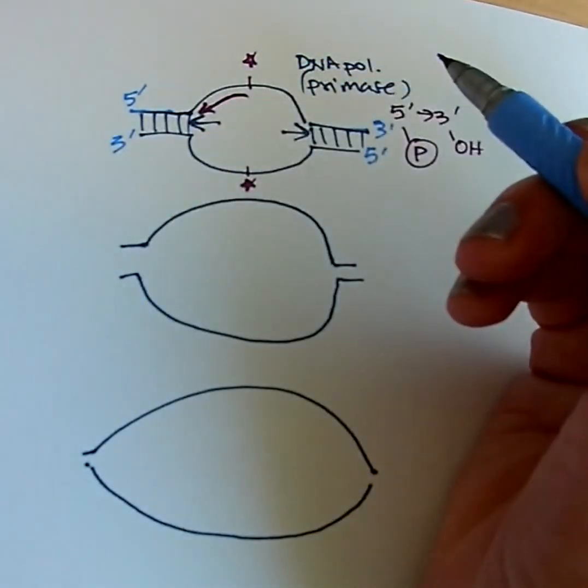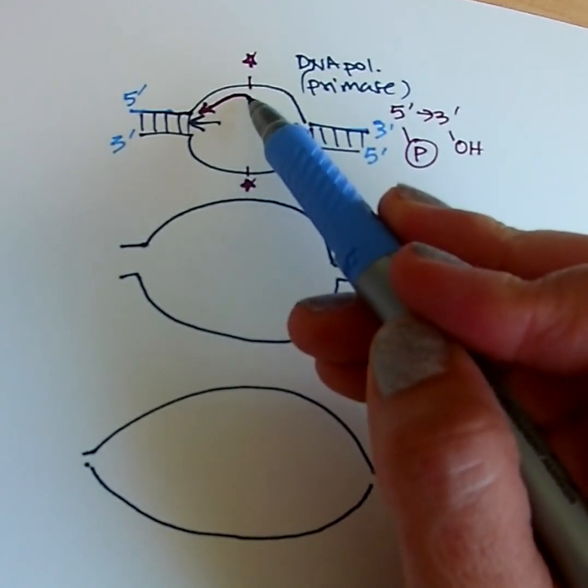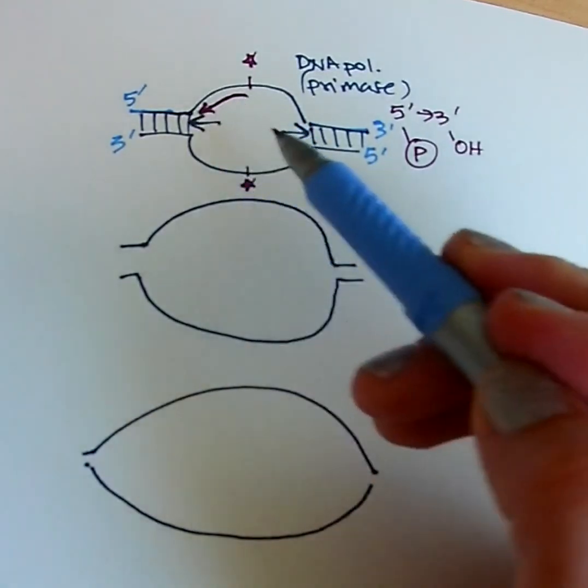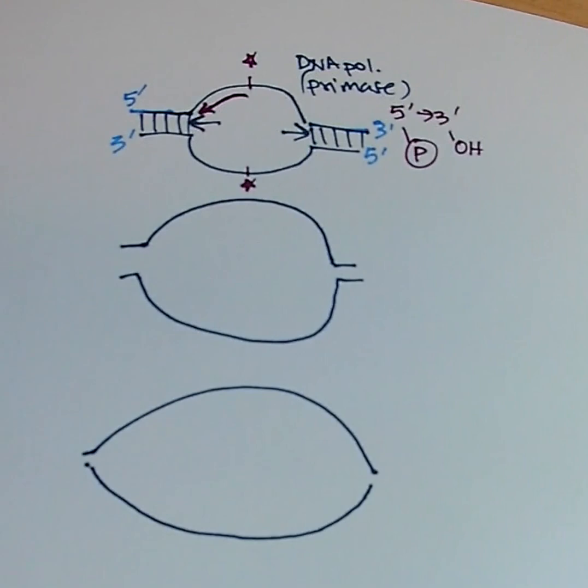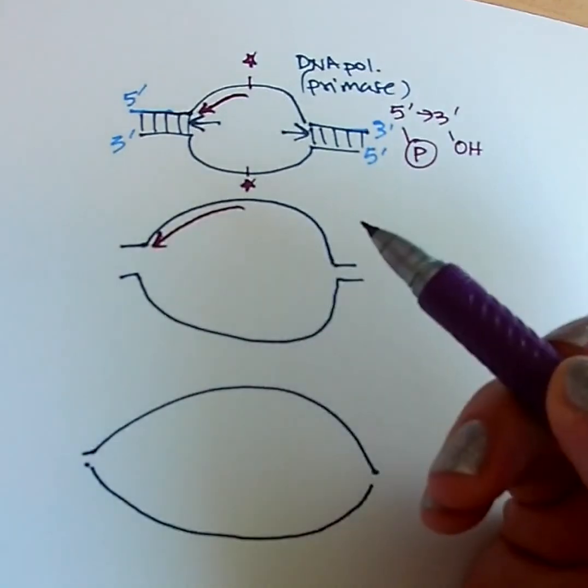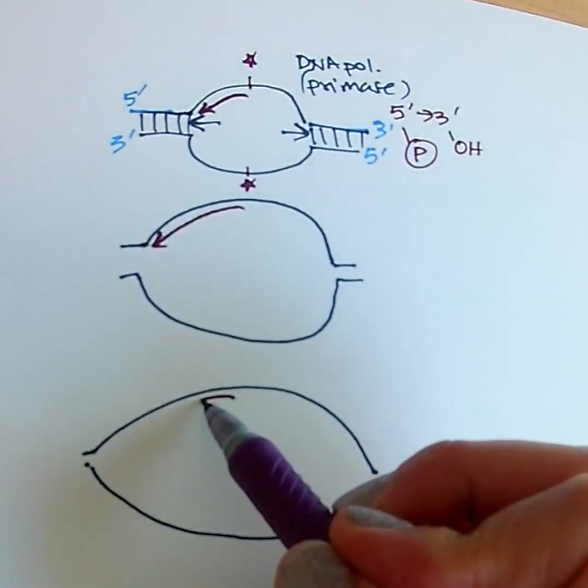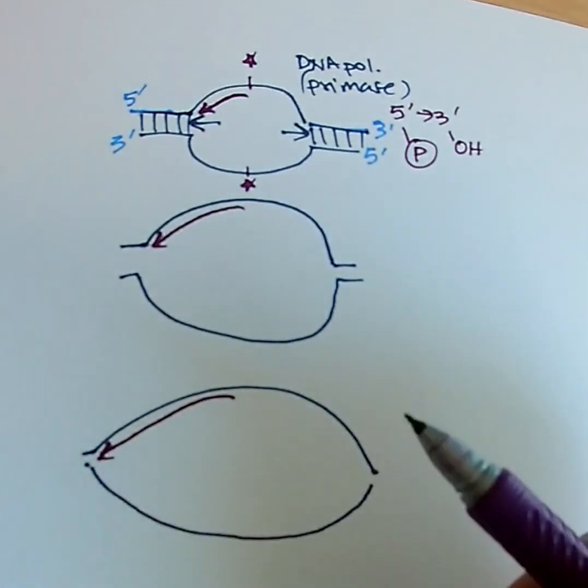That makes this over here the three prime end. The opposite strand will be five prime end and three prime end. So when I draw this arrow, it's always going to be five prime is the blunt end of the arrow, three prime is the arrow end of the arrow. So as DNA polymerase makes this piece of DNA, it's just going to travel along the fork and it's not going to have any trouble adding on as the fork opens up. DNA polymerase moves in this direction, and the piece just gets longer and longer.